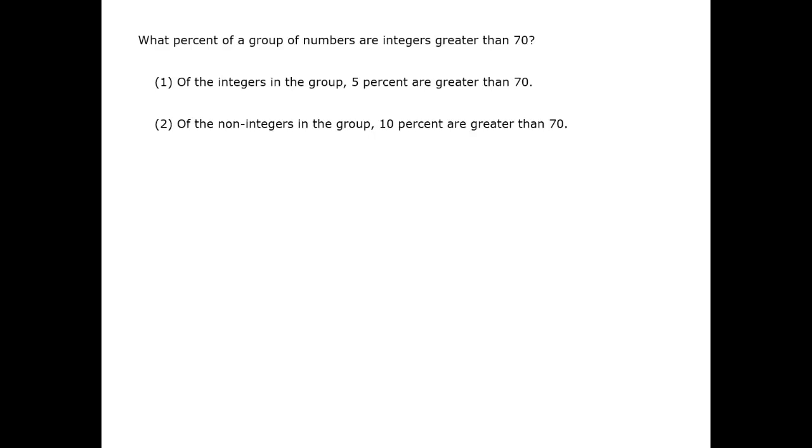Looking at the statements separately, for example, statement 1 tells me that 5% of integers are greater than 70. But for all I know, 100% or 0% of the non-integers could be above 70. I have no way of knowing the overall percentage. Therefore, statement 1 by itself is insufficient to give a definitive answer to the question.